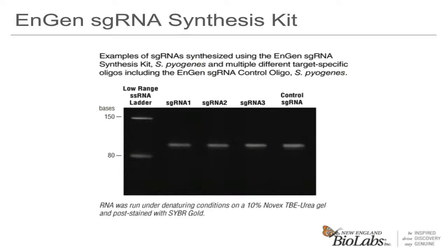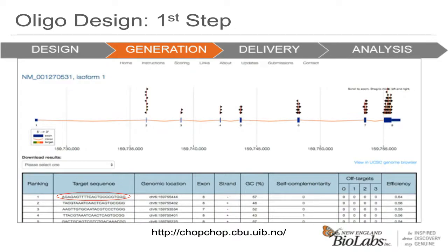Remember back to when we looked at the CHOPCHOP site at the beginning of the talk? Now we can take that outputted target sequence, highlighted in red, and copy it to use with the NEB web tool. This would be the same regardless of which web resource you use to generate your targets. The important thing is to copy the 20-nucleotide sequence and remember not to include the PAM sequence — this is a common mistake. The PAM is part of the recognition sequence in the genome; however, it is not part of the sgRNA. Our web tool will make sure the PAM is not included.